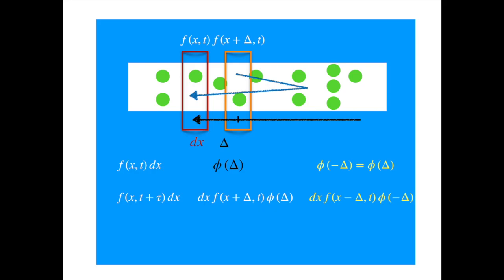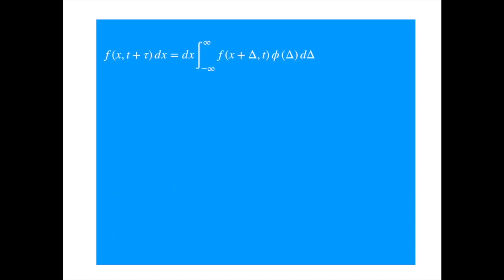Now if we integrate these movements into x across the line, then we get the number of particles at location x at a later time t plus tau. Now we can get rid of dx.